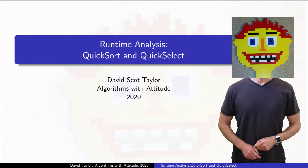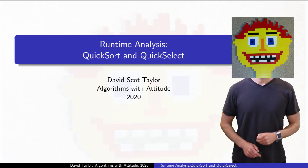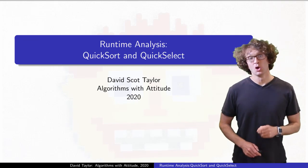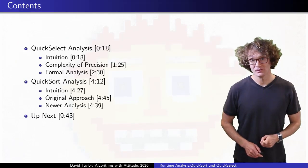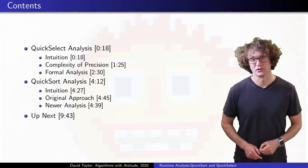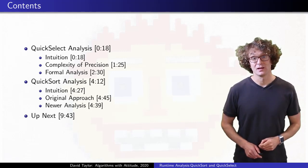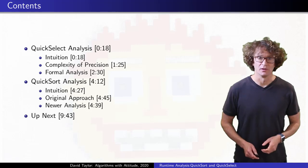This video covers analysis for the randomized quicksort and quickselect algorithms. You should know them before watching this. We'll see intuition and formal analysis for quickselect, and then quicksort. Until that last analysis, there aren't any graphics, sorry.